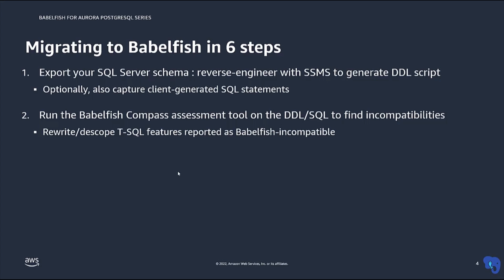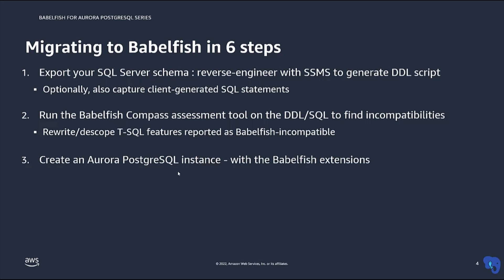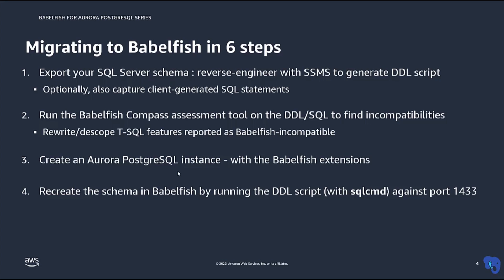There are separate videos on the COMPASS tool and you should check them out. Next, you need to create a Babelfish instance. That's pretty simple — just go to the RDS service at AWS, create a new Aurora Postgres database, and tick the box to turn on Babelfish. Once you have your instance, you need to recreate the schema in Babelfish by taking your DDL script and executing it against the TDS port of Babelfish. This is best done using the command line utility SQL CMD.